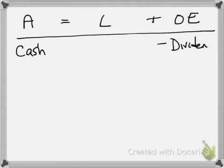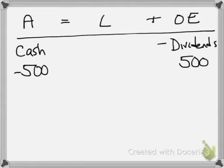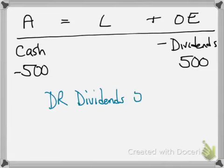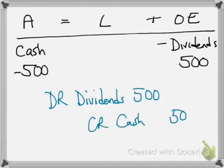Lastly, we paid five hundred dollars for dividends, so it's a decrease to cash of five hundred and we have an increase to the dividend account. Therefore, debit dividends — which follow the plus-minus rule — and credit cash for five hundred dollars.